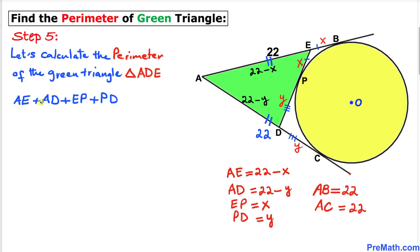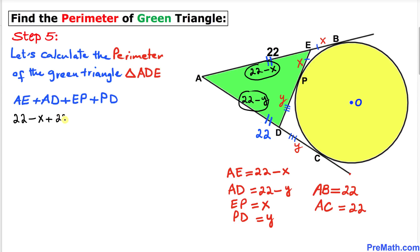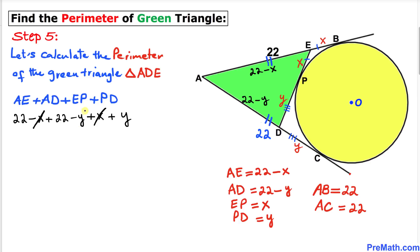Now for the final step, let's calculate the perimeter of the green triangle ADE by adding all side lengths: AE + AD + EP + PD = (22 − x) + (22 − y) + x + y. The negative x and positive x cancel, and the negative y and positive y cancel, leaving simply 22 + 22 = 44 units.